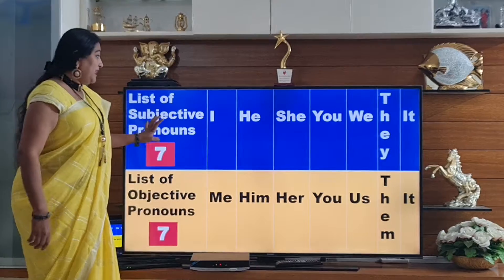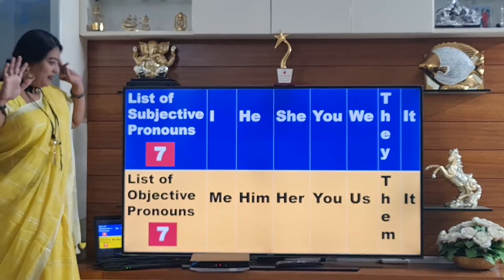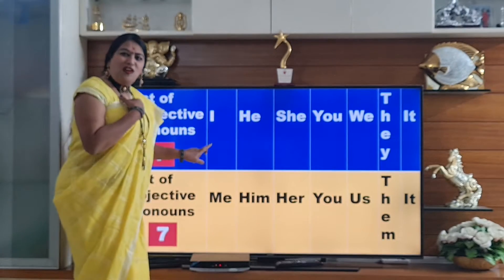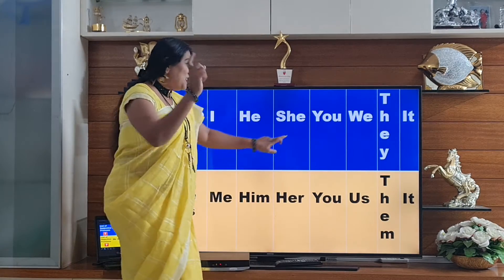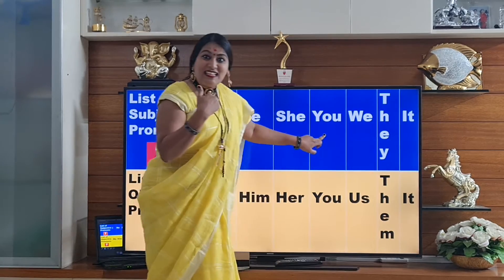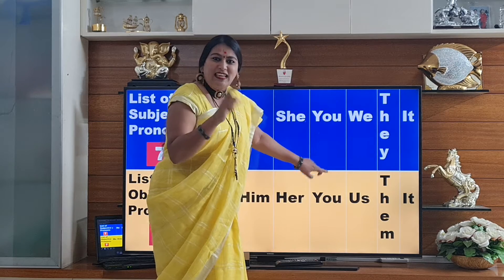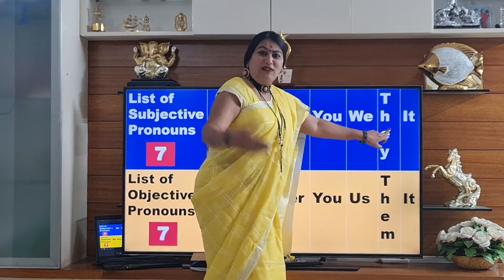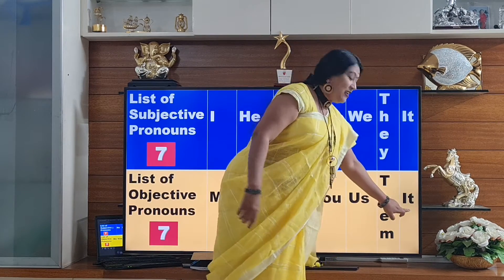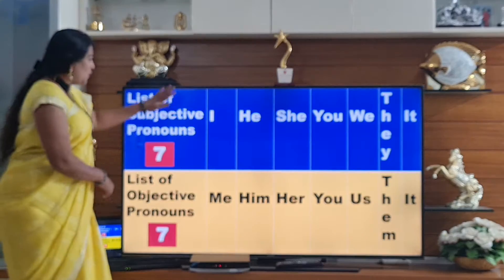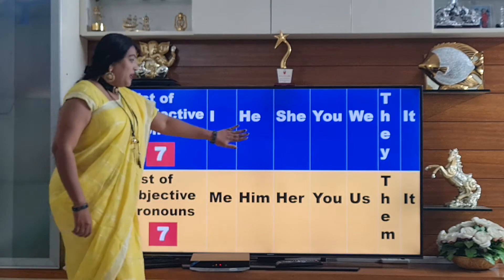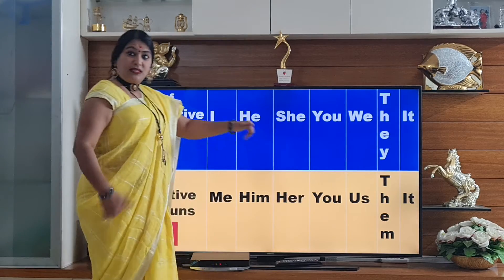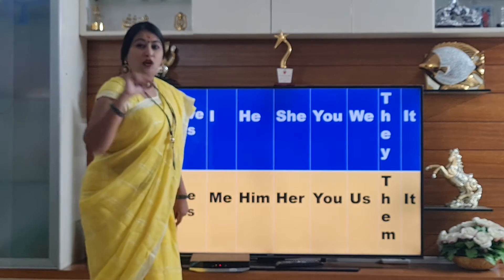I hope you have understood, children. Now let's compare both. Subjective pronoun has seven, objective pronoun also has seven. I becomes me. He becomes him. She becomes her. You remains you. We becomes us. They becomes them. And it remains it. So you and it remain the same in both subjective and objective forms.